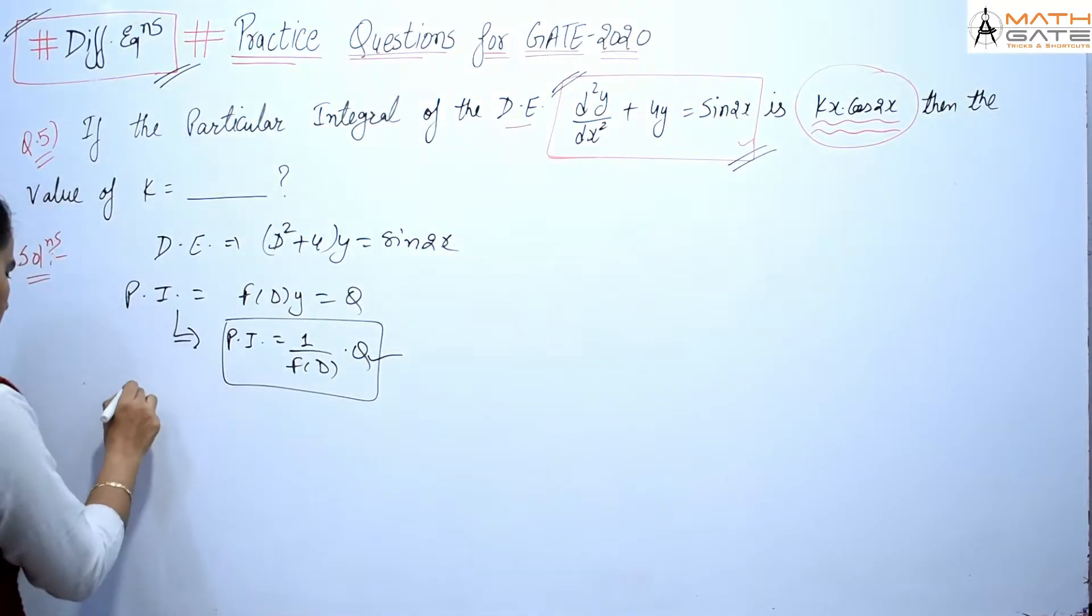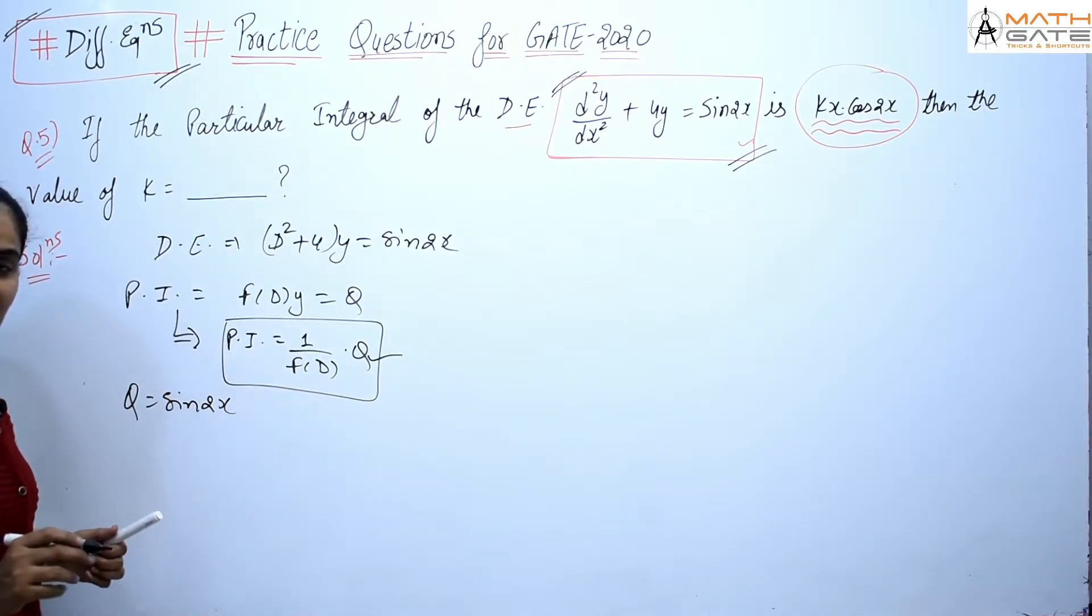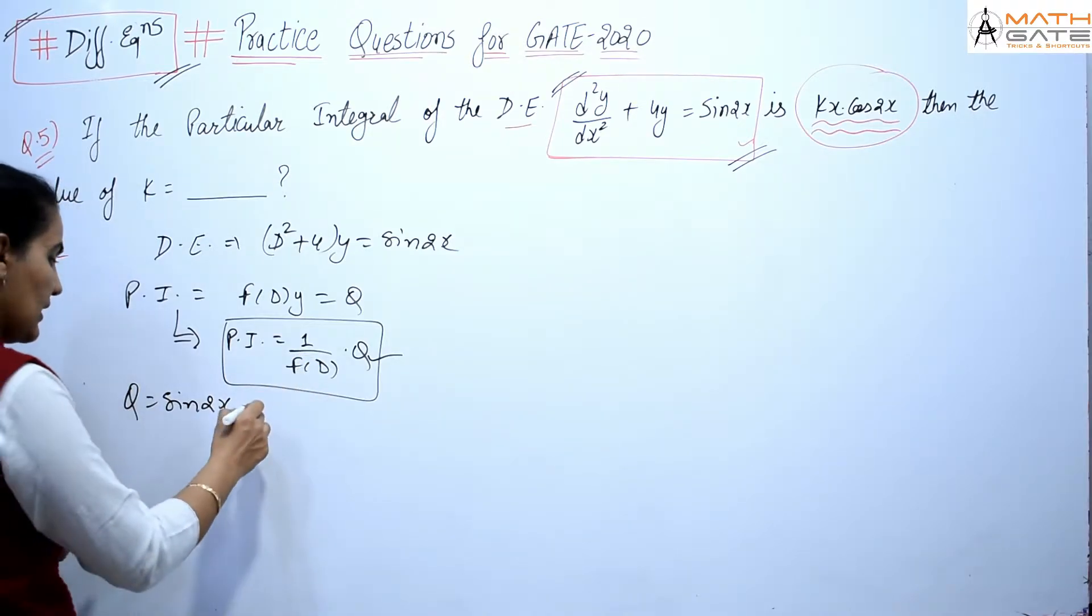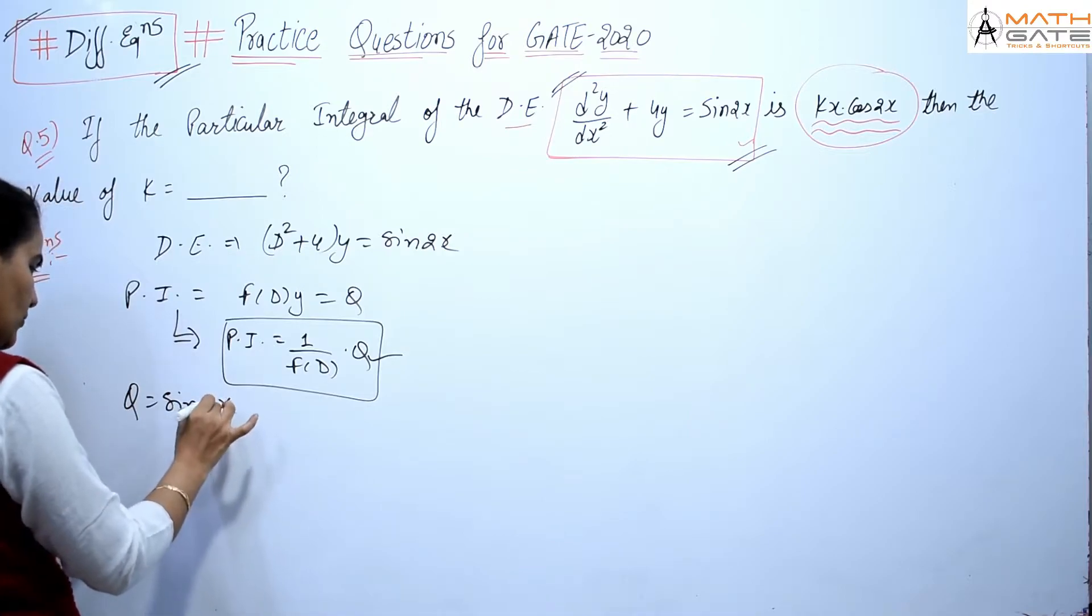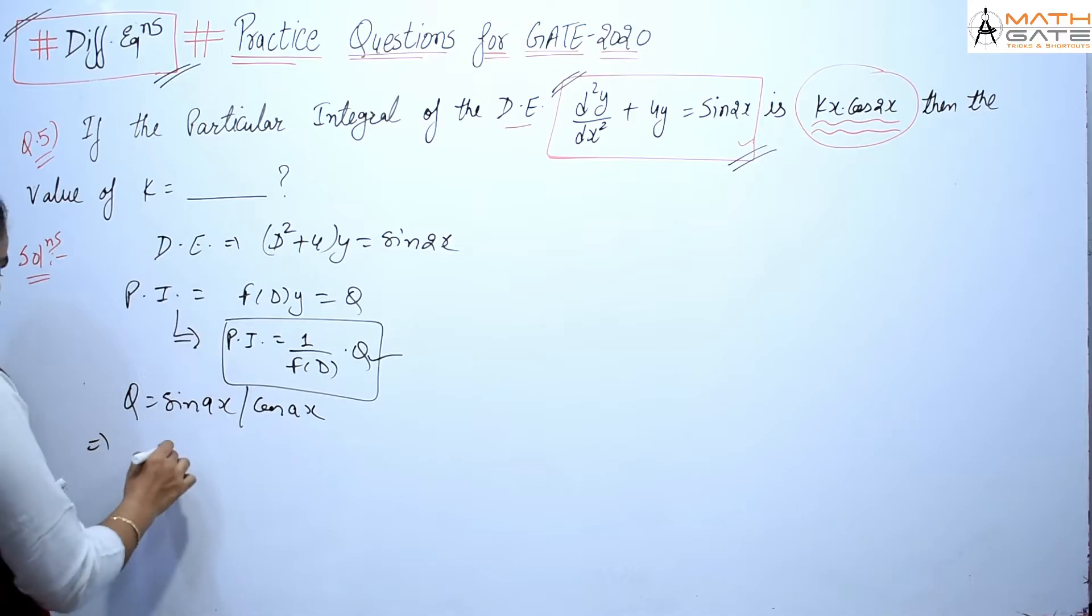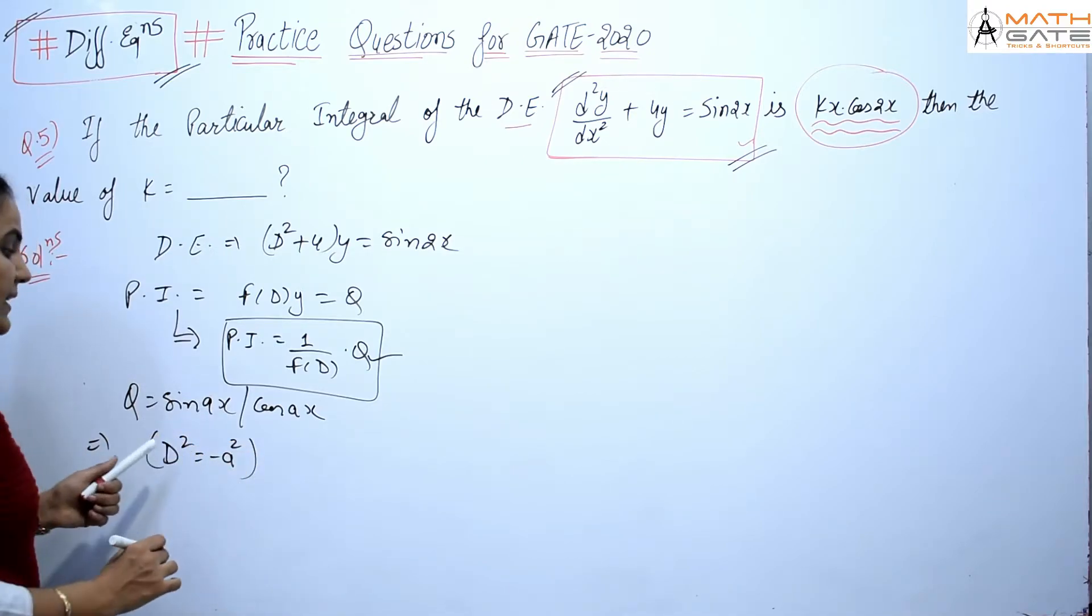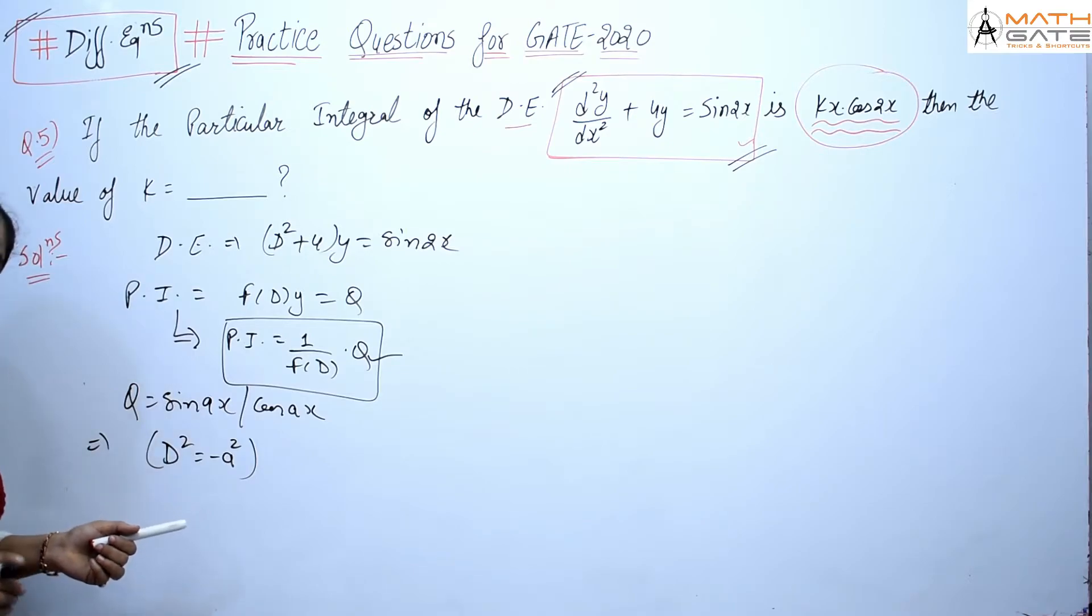Now here, Q is given as sin(2x). As we know very well, if Q equals sin(ax) or cos(ax), then we substitute in f(D): D² is replaced by -a².